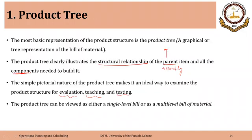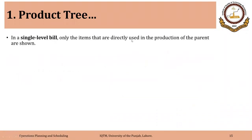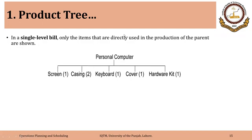The product tree can be viewed as either a single level bill or multi-level bill of material. First we will discuss what is a single level product tree. In a single level bill, only the items that are directly used in the production of the parent are shown.